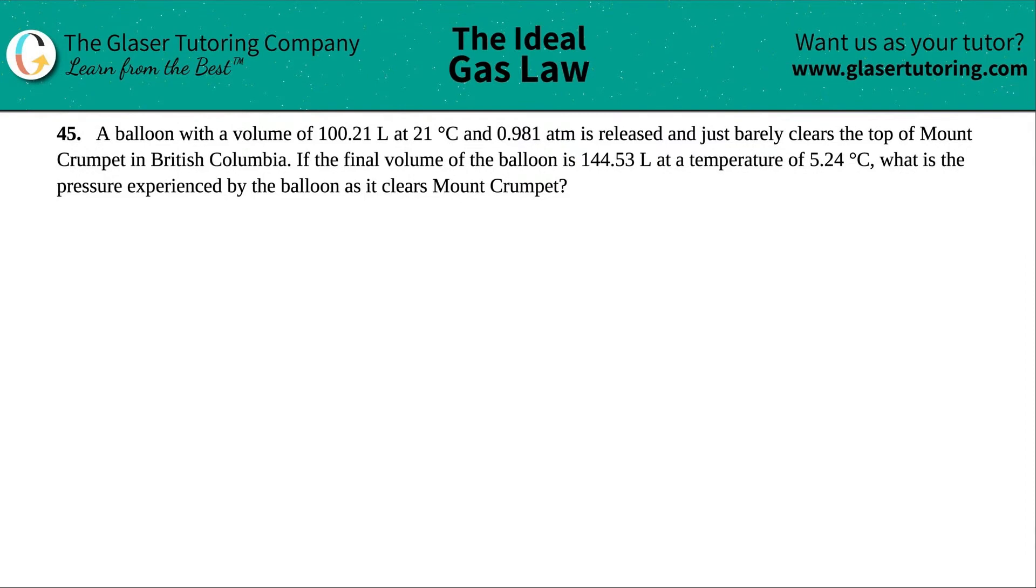Number 45. A balloon with a volume of 100.21 liters at 21 degrees Celsius and 0.981 ATM is released and just barely clears the top of Mount Crumpet in British Columbia. If the final volume of the balloon is 144.53 liters at a temperature of 5.24 degrees Celsius, what is the pressure experienced by the balloon as it clears Mount Crumpet?